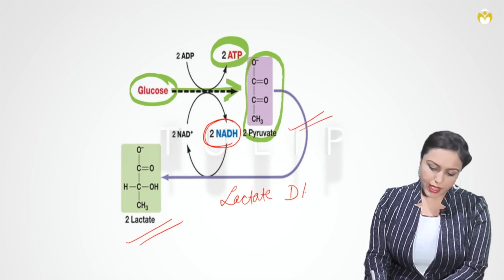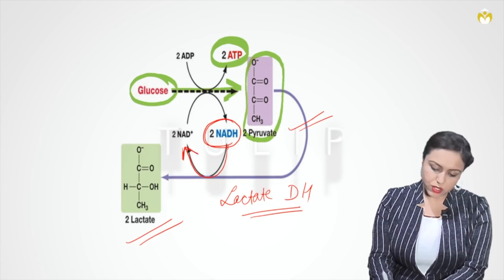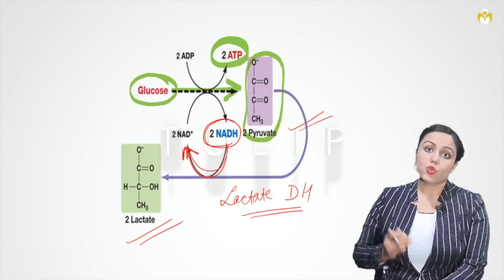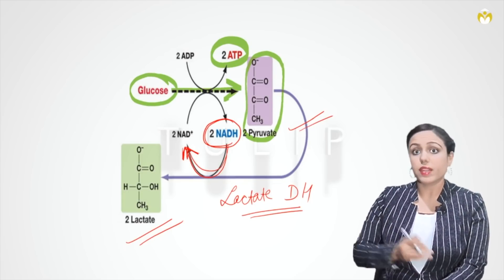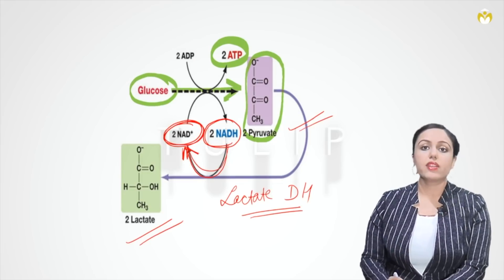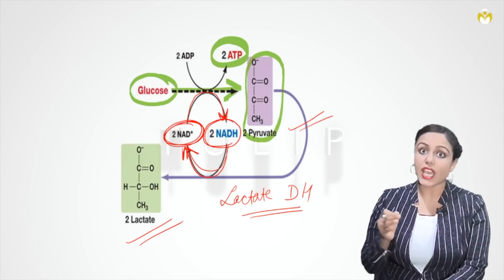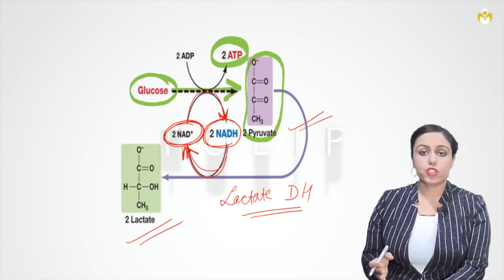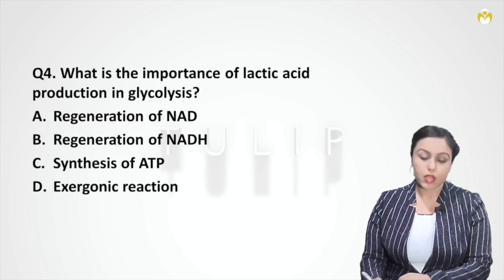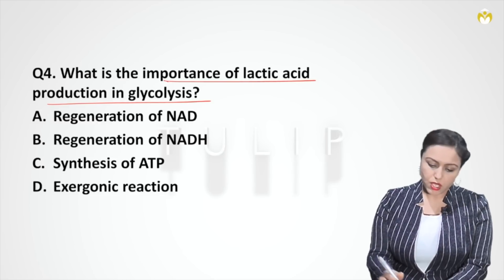Lactate dehydrogenase converts NADH to NAD. When glucose was being converted to pyruvate, NAD was being converted to NADH; now the opposite is happening. The purpose of this extra step of anaerobic glycolysis is not the production of lactate — its purpose is to regenerate NAD so that NAD can again be used for glycolysis and these steps can continue. Otherwise, if NAD is not regenerated, glycolysis will stop. So the answer to what is the importance of lactic acid production in glycolysis is: regeneration of NAD. Option A is the answer.